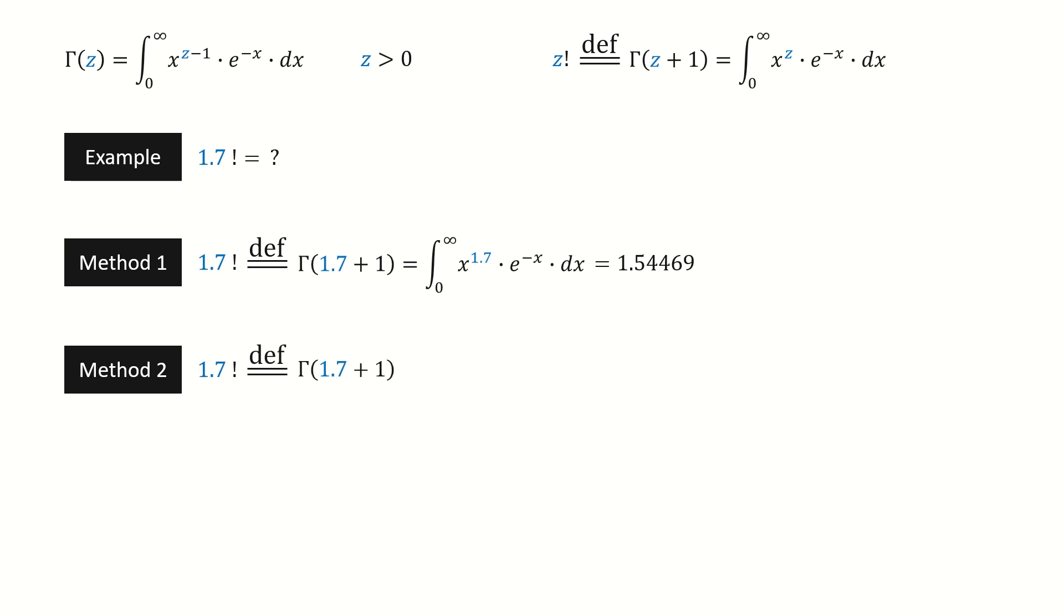For method 2, again we use the definition. Recall property 1 we derived in episode 1. You can click the link under this video to watch it. After using property 1, we get here.